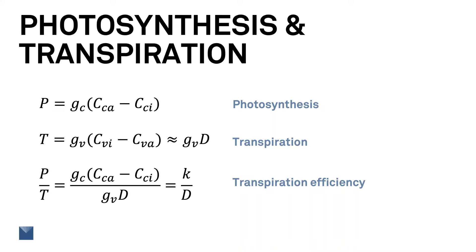Now, we can model photosynthesis as a stomatal conductance, G sub C in the equation, multiplied by the difference in CO2 concentration in the atmosphere and inside the leaf. The second equation is for transpiration. It's similar — it's the product of the vapor conductance, G sub V, and the difference in water vapor concentration inside the leaf and in the atmosphere. D is called the vapor deficit of the atmosphere. If the leaf is at atmospheric temperature, then D is equal to the difference in vapor concentration inside and outside the leaf.